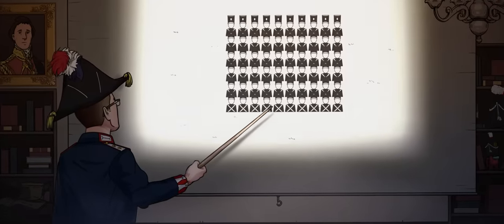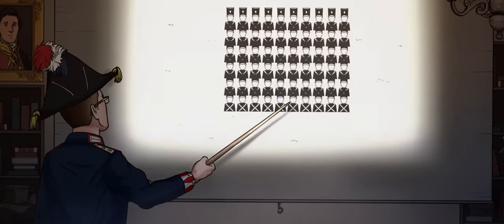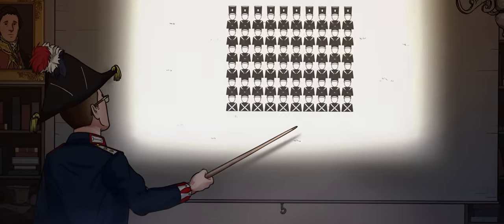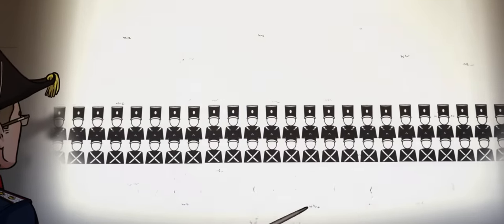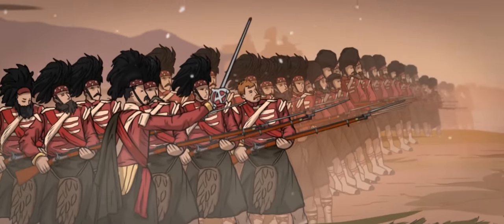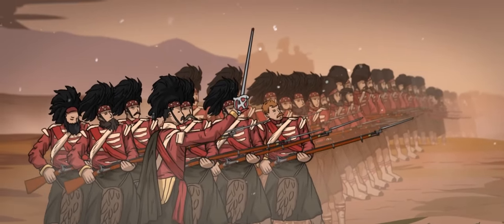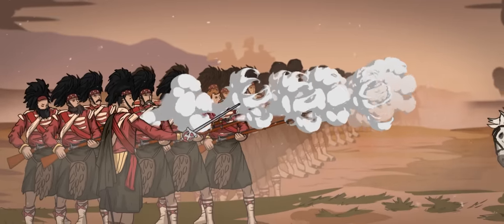Still, some innovations were made, and it became clear that shallow linear formations were more advantageous than deep columnar ones when it came to maximizing the number of troops who could see and shoot a given target. No longer were formations eight men deep, but rather two or three, and any more would make it difficult and risky for the backfile to fire.